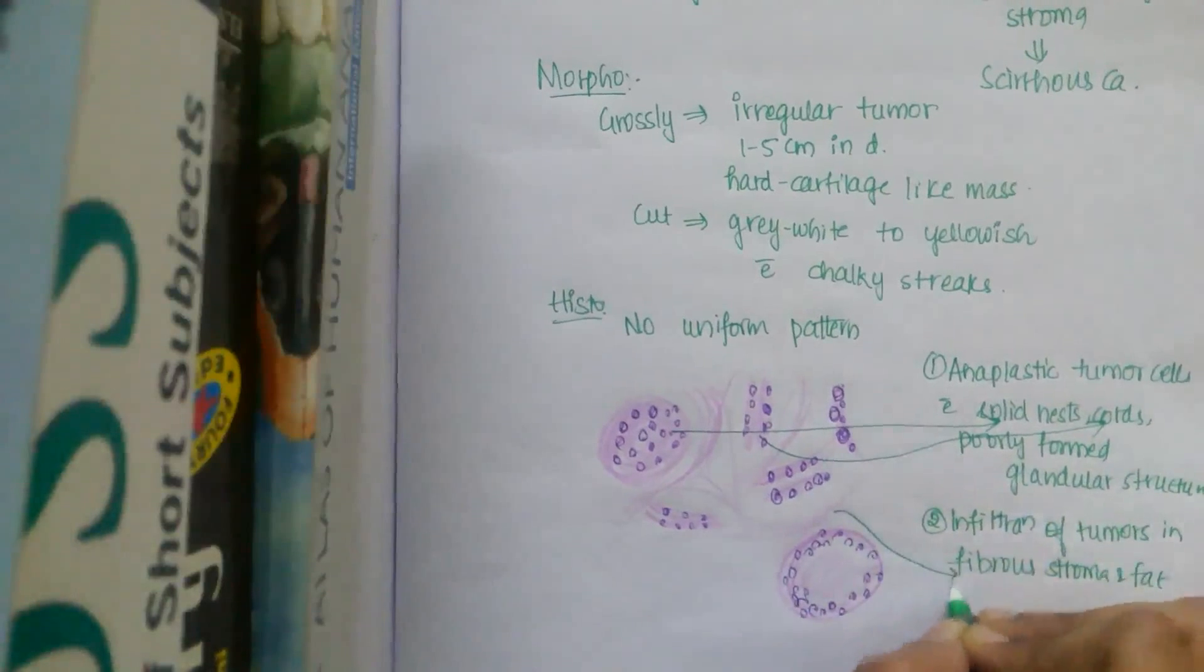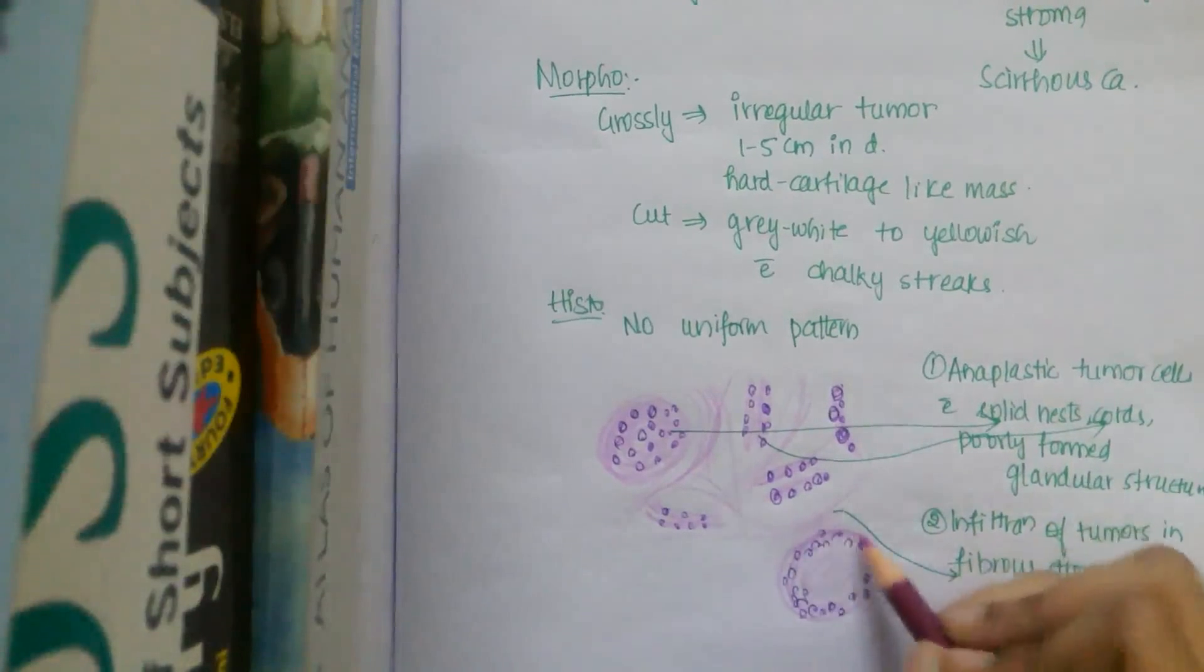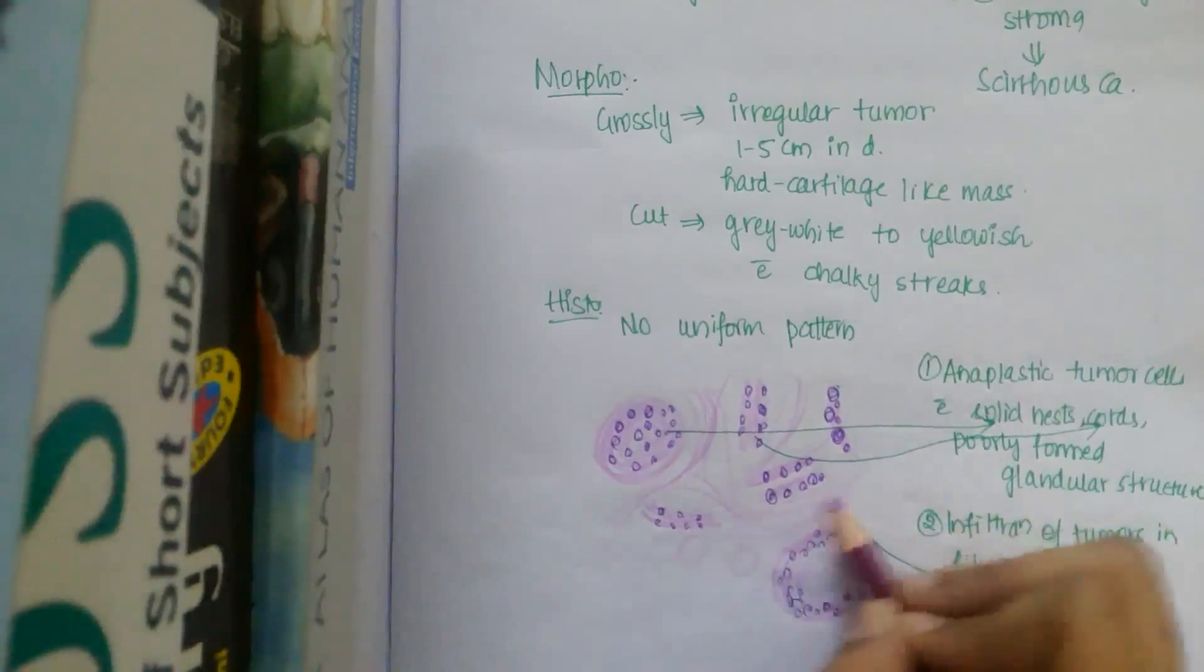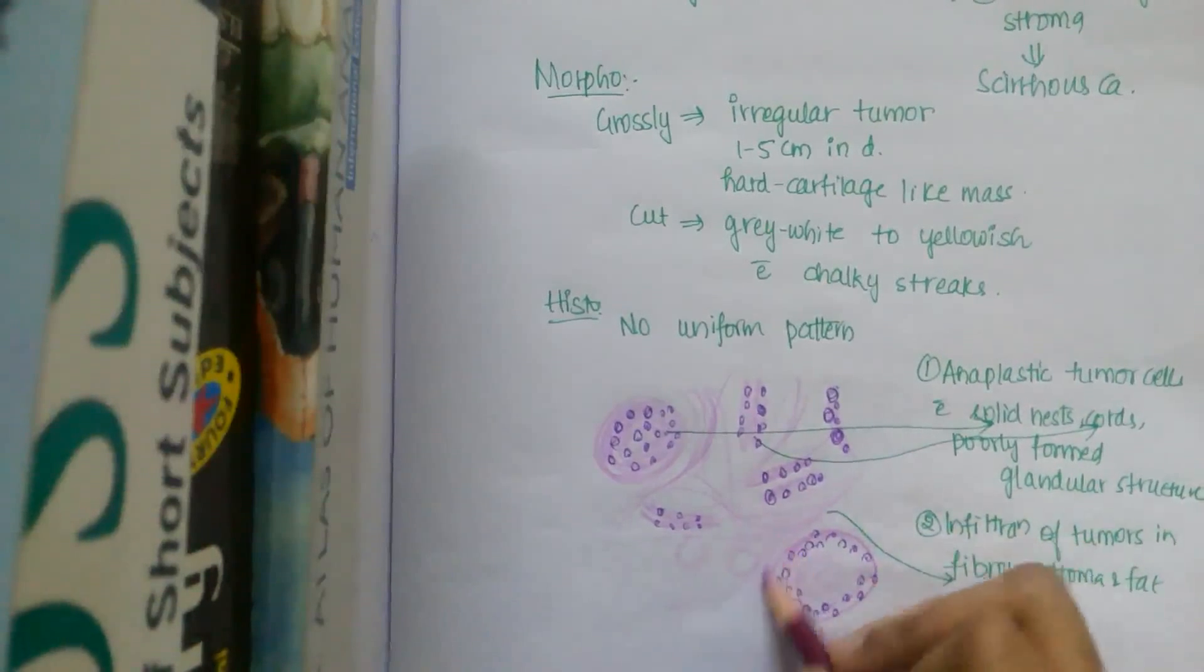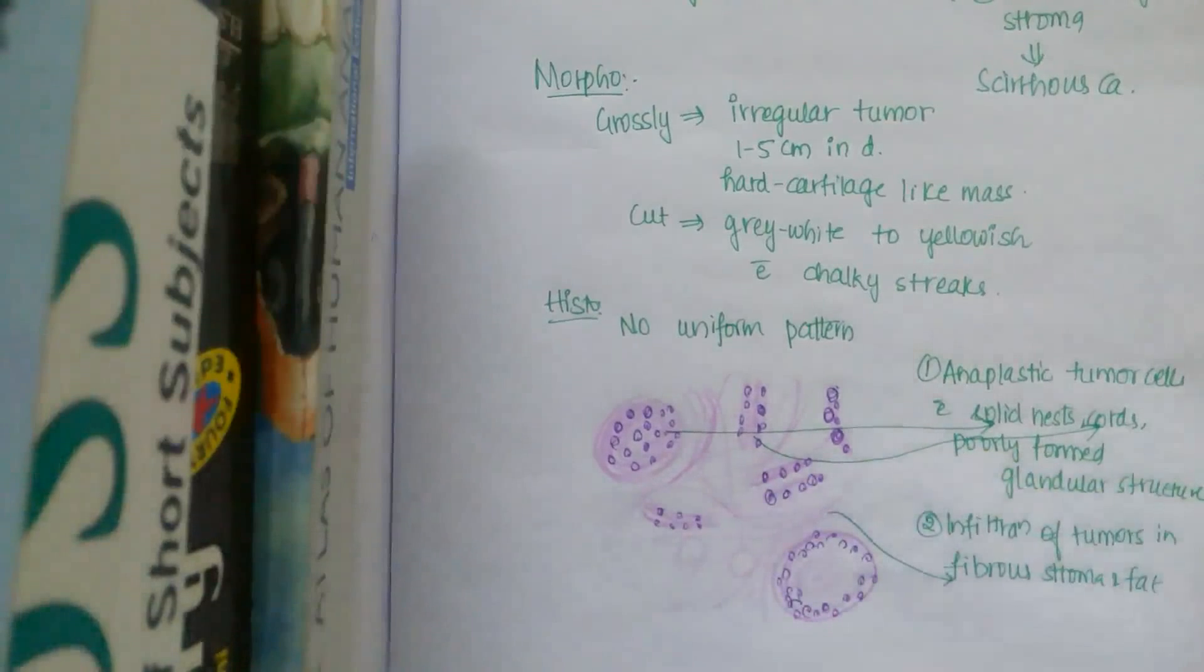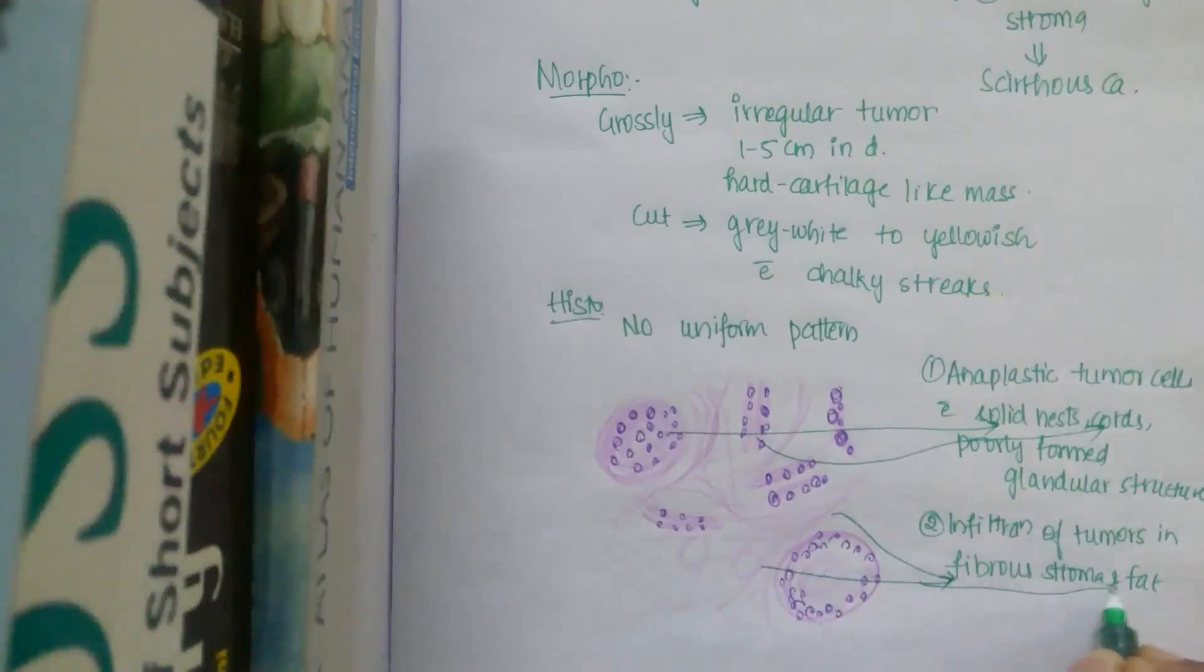And the second point is infiltration of tumors in fibrous stroma and fat. So this is the fibrous stroma and these are the fat cells. Fat cells.